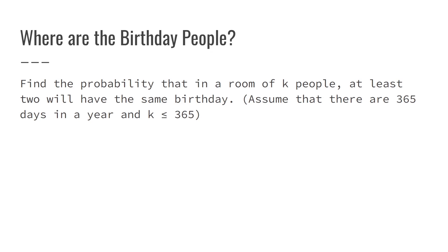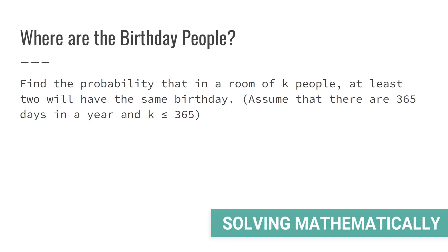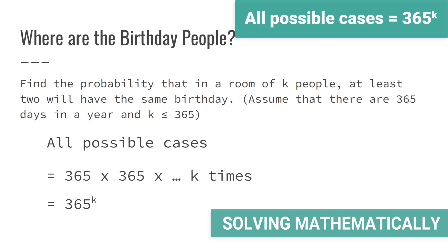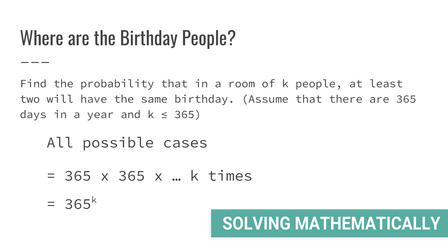Unlike the previous problem where repetitions were not possible, here the birthdays might fall on the same day. Therefore, for each of the k people in the room, there are 365 possible scenarios for each person. Therefore, all possible outcomes become 365 × 365 × ... k times, which resolves to 365 to the power k.